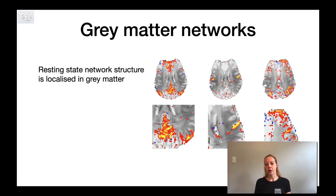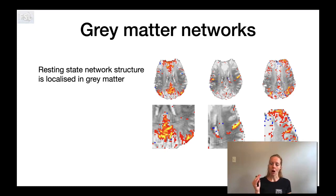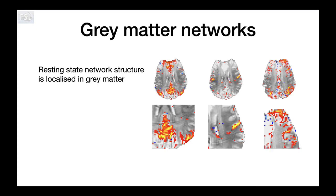This slide shows the focal localization of resting state networks in the gray matter. These results are from high-resolution, unsmoothed images, so they might look a little noisy at first. But when you zoom in, as you can see on the bottom line here, you can really see that the outline of these resting state networks follows the gray matter ribbon very nicely.